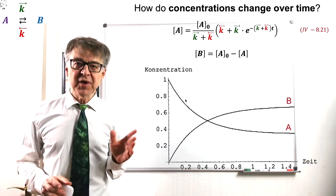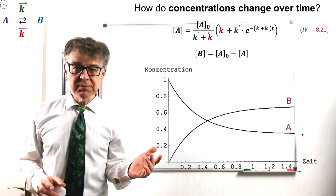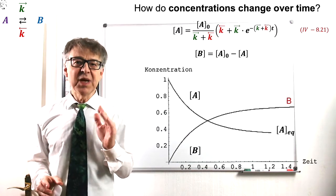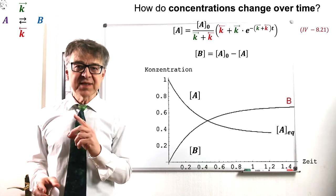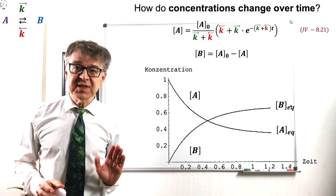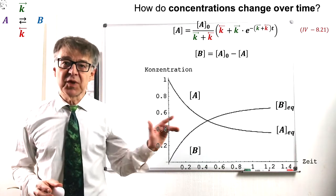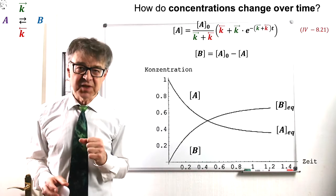The concentration of A decreases exponentially, but not to zero, but to an equilibrium value A-eq. Likewise, the concentration of B increases from zero to an equilibrium value B-eq.